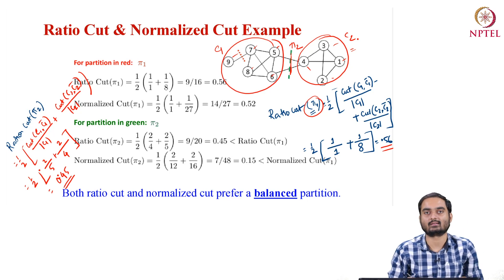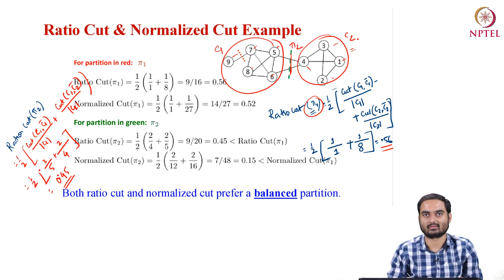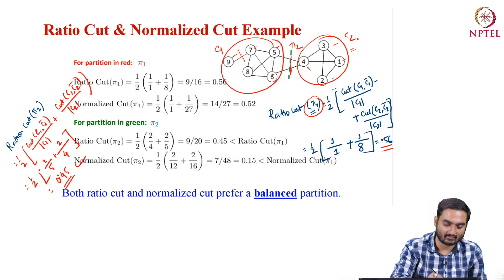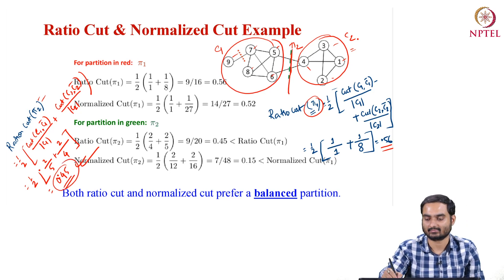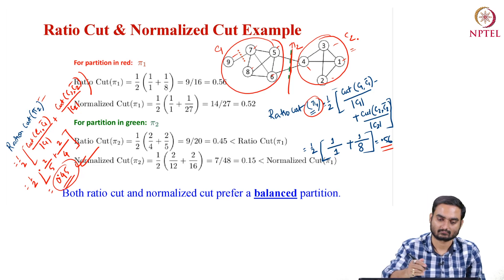So ratio cut of pi1 is 0.56 and ratio cut of pi2 is 0.45. Which partition do we choose? Remember, our task is to minimize the ratio cut — we are minimizing the objective function. We will choose pi2 because this partition gives the minimum ratio cut, so we cut there, which was also our intuitive choice. Ratio cut gives you the ideal solution.